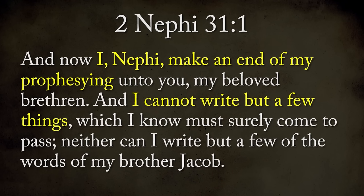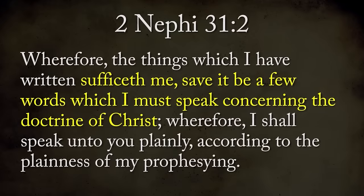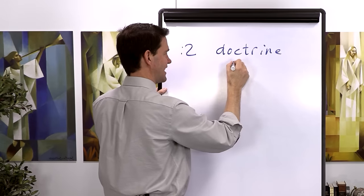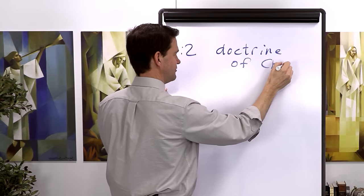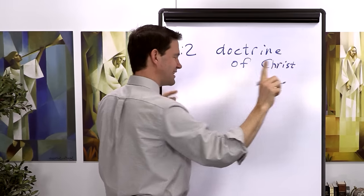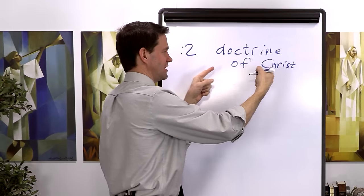In 2 Nephi 31, Nephi tells us he's basically done. He says he can only write a few more things. Everything he's written up through chapter 30—he says in verse 2, 'it sufficeth me, save it be a few words which I must speak concerning the doctrine of Christ.' He's written everything he needed to write, except for a few more things concerning the doctrine of Christ.